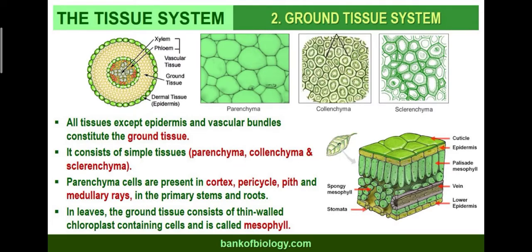The second tissue system is the ground tissue system. All tissues except epidermis and vascular bundles constitute the ground tissues. It consists of simple tissues like parenchyma, colenchyma, and sclerenchyma. Parenchyma cells are present in the cortex, pericycle, pith, and medullary rays in primary stems and roots. In leaves, the ground tissue consists of thin-walled chloroplast-containing cells called mesophyll.